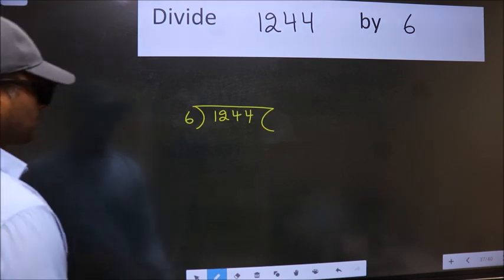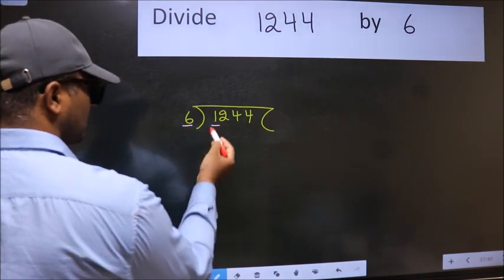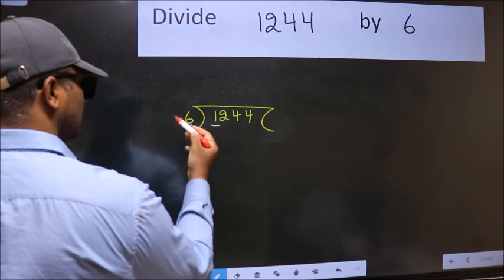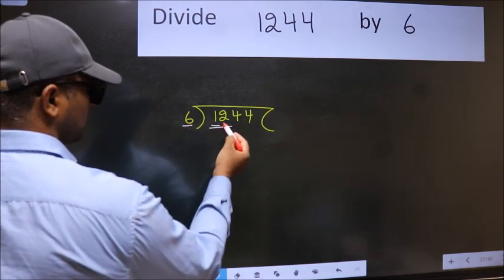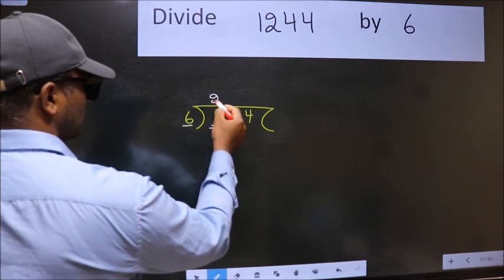Next. Here we have 1 and here 6. 1 is smaller than 6, so we should take 2 numbers, 12. When do we get 12 in 6 table? 6 times 2 is 12.